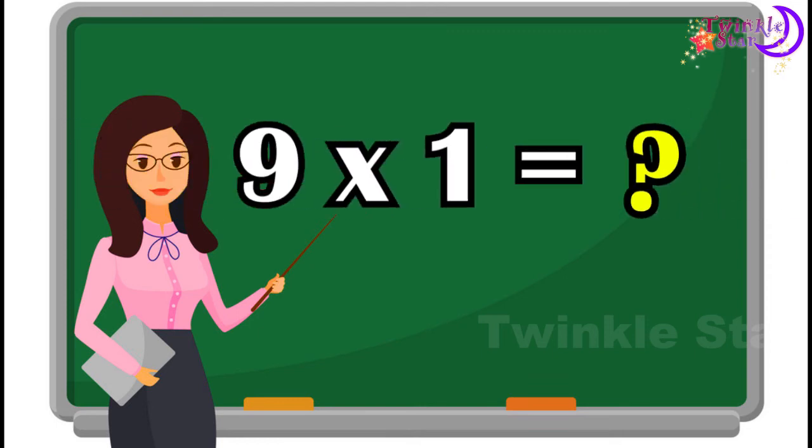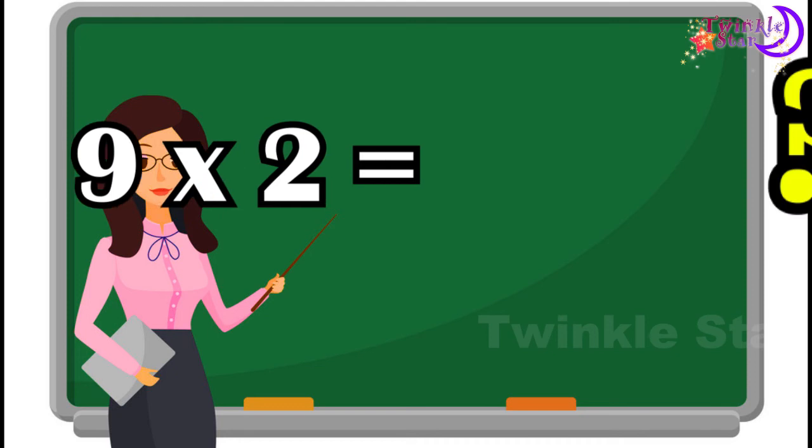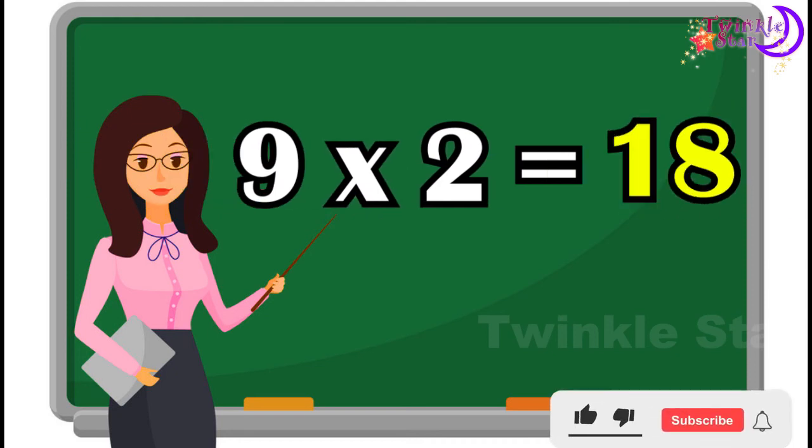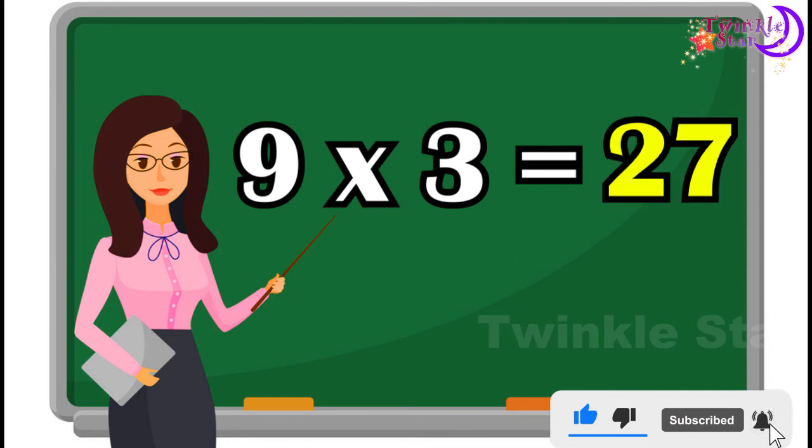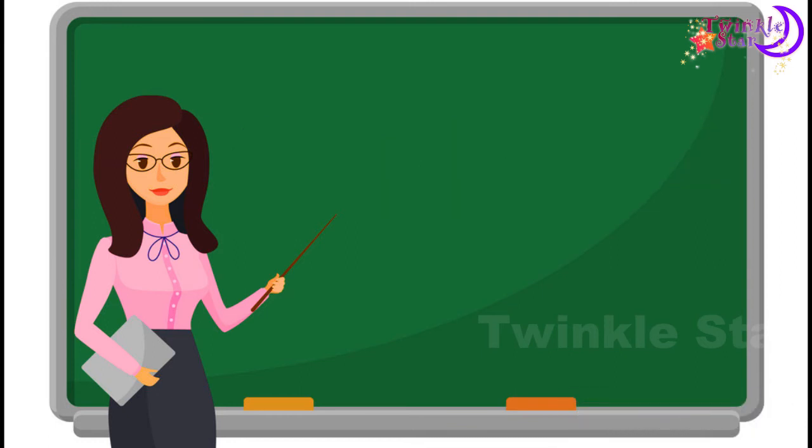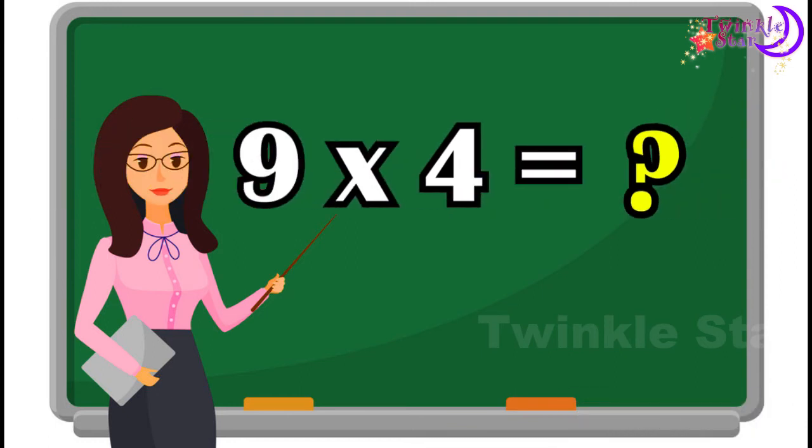9 10s are 90, 9 10s are 90. 9 1s are 9, 9 2s are 18, 9 3s are 27.